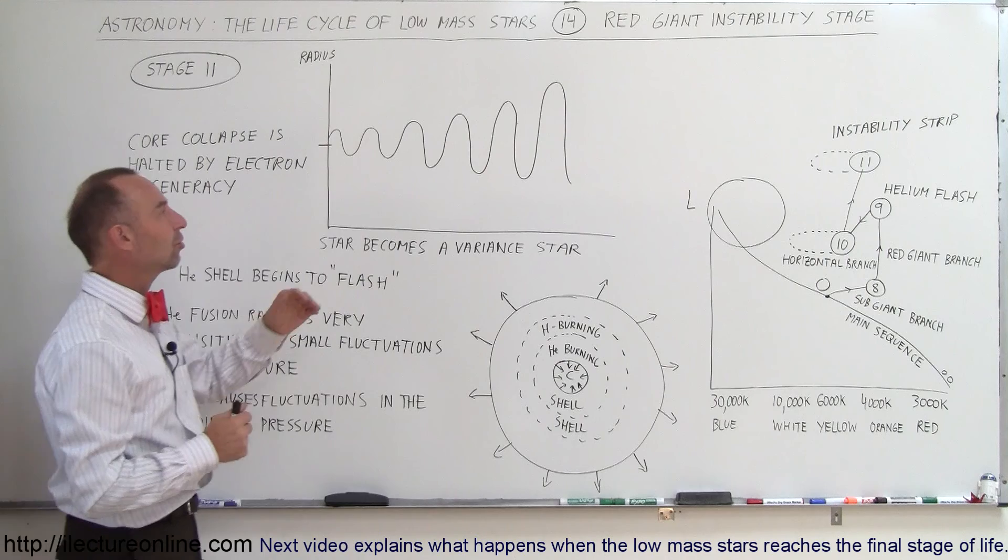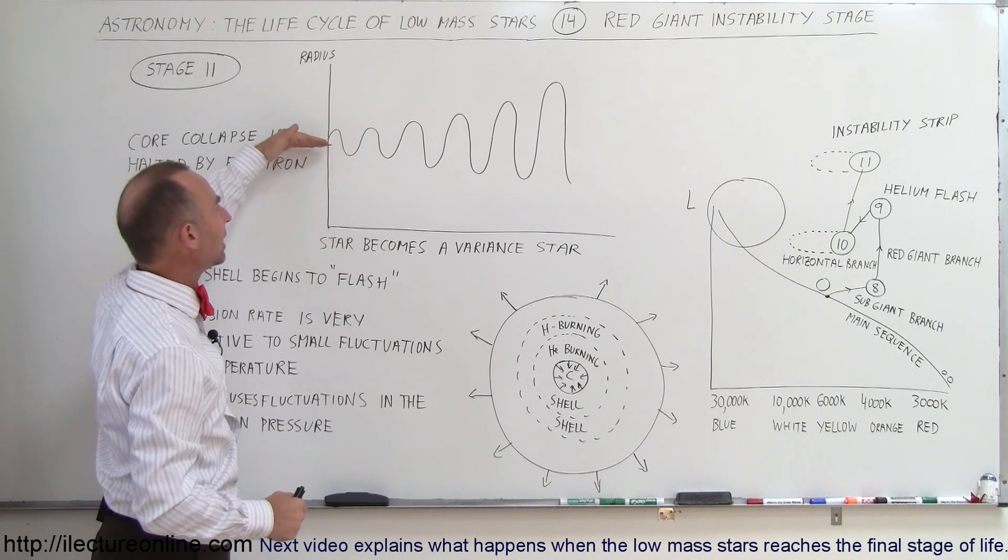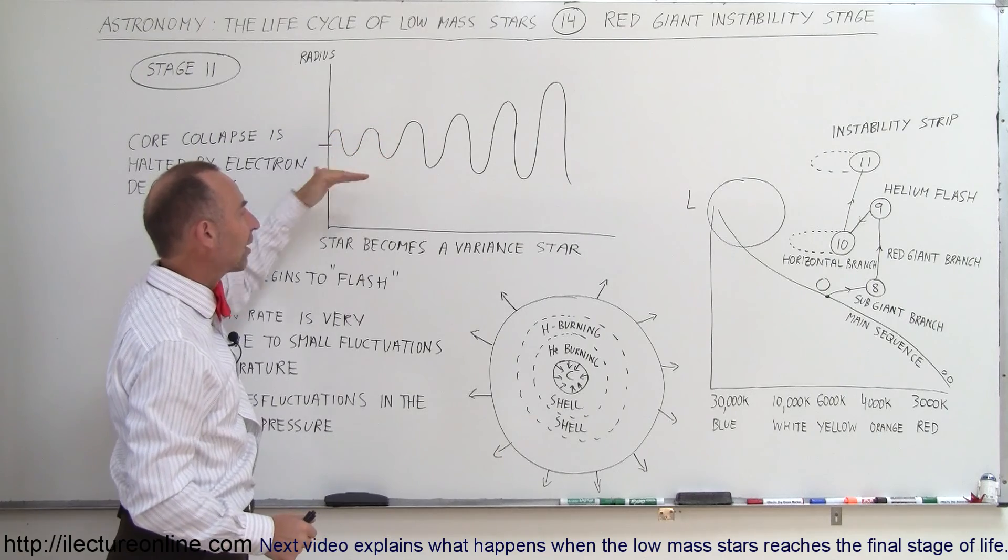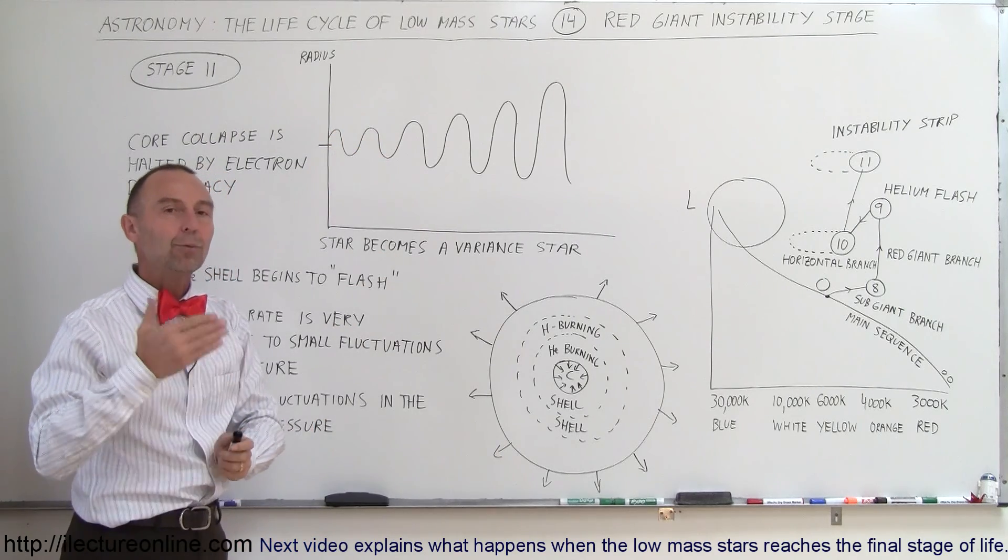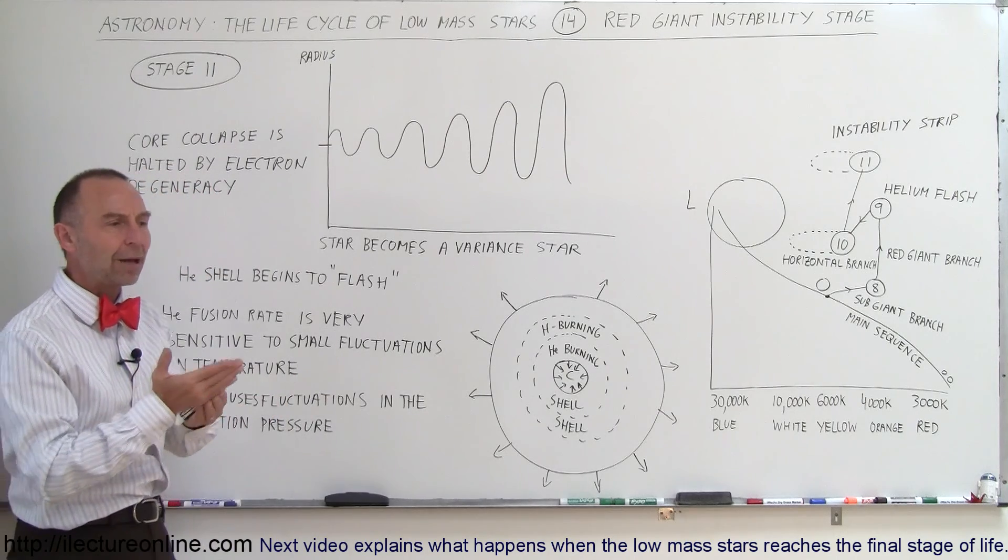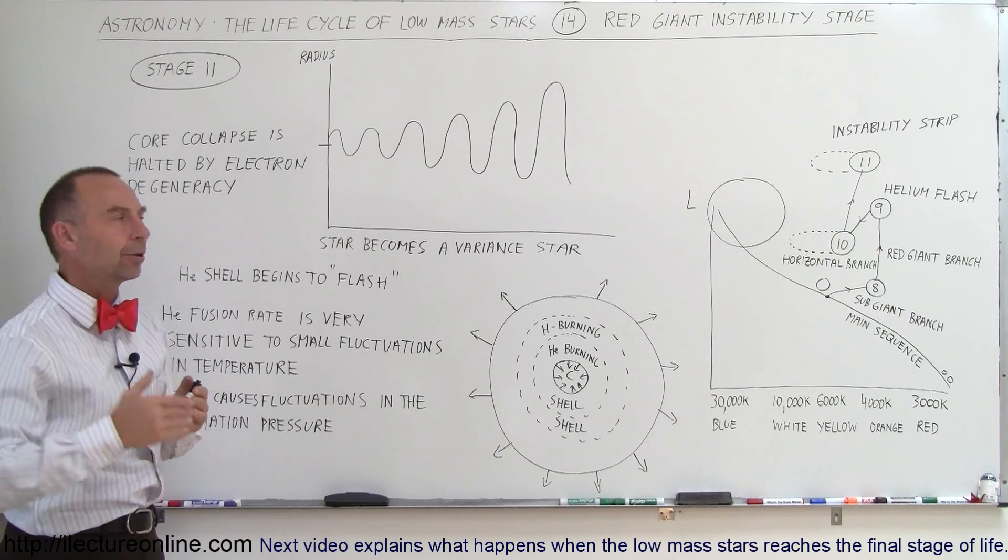That has such an enormous effect on the star that the radius will increase and decrease in size over time in a very regular pattern. That can happen from anywhere from about a one day period to several month period.